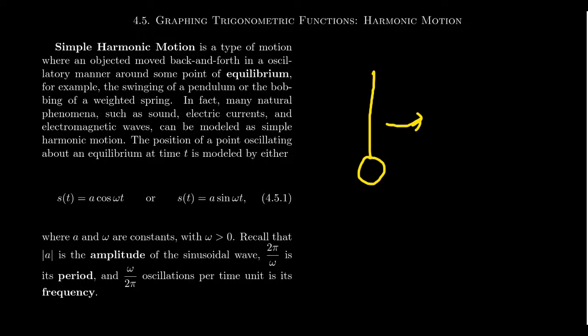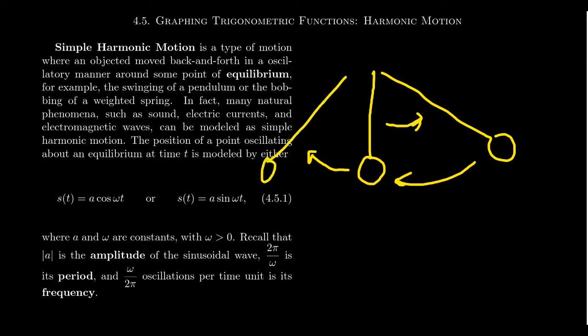Simple harmonic motion, or just harmonic motion for short, is a type of motion where objects move back and forth in an oscillatory manner around some type of equilibrium. Two classic examples of this would be like the pendulum of a grandfather clock. So we have our pendulum right here. There's some weight at the end, and it's going back and forth.